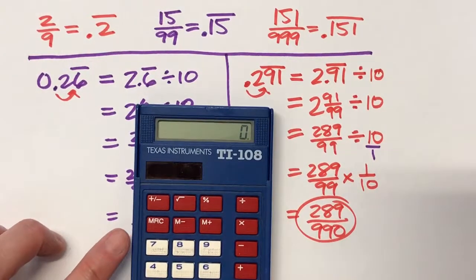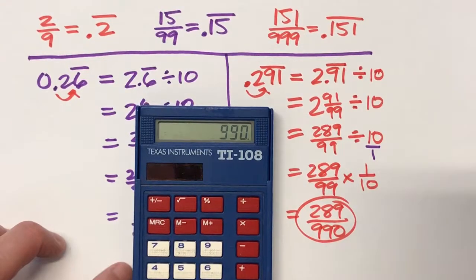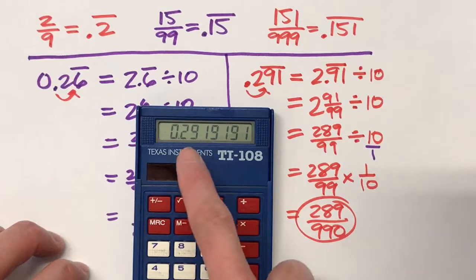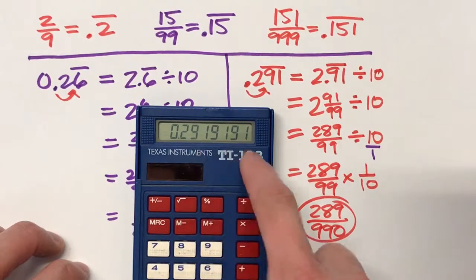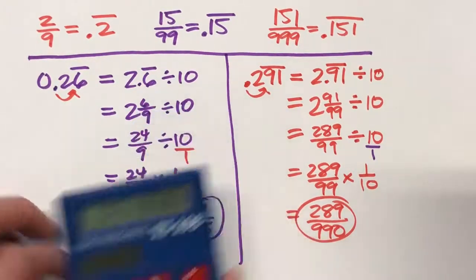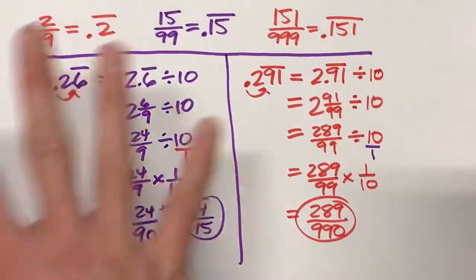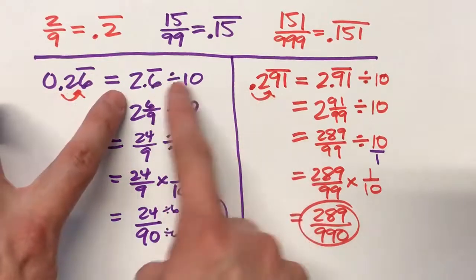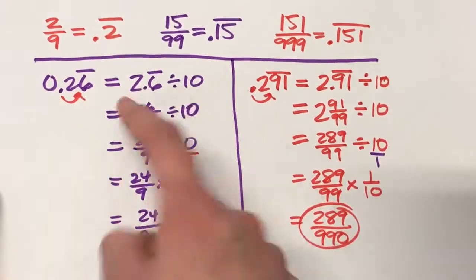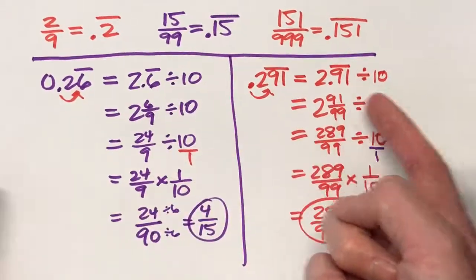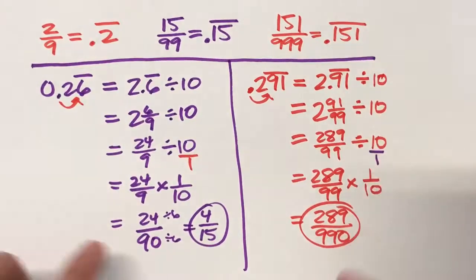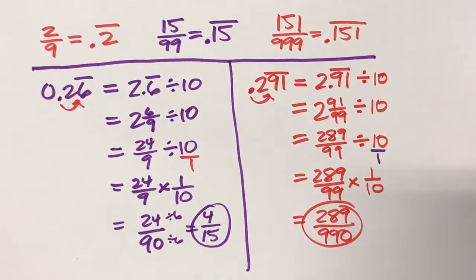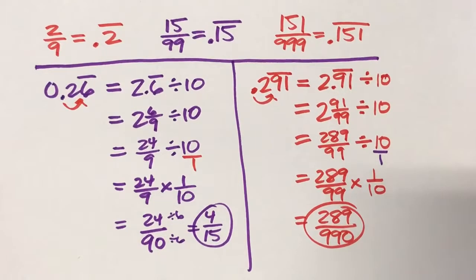And if I want to double check, 289 divided by 990, I should get 0.29191919 repeating. And look, I do. So really the key to this whole strategy is to take your original decimal, divide it by 10 so we make it into an easier decimal to convert, and then simplify it down into a single fraction. And then you'll have the fraction equivalence.